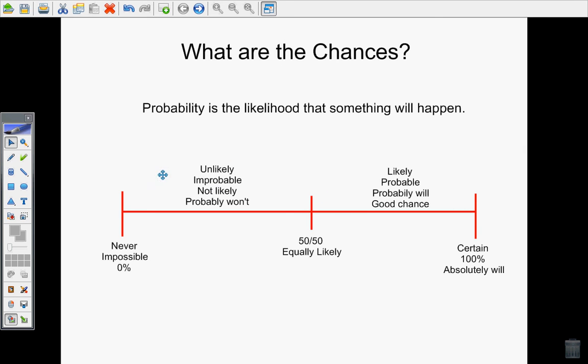So again, there's a continuum here where it goes from never happening all the way up to always happening. And each event in life can fall somewhere along this.